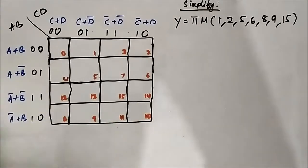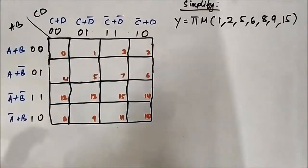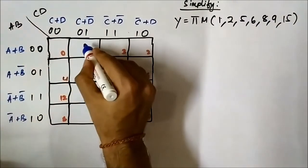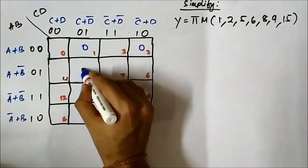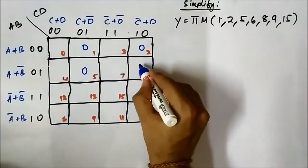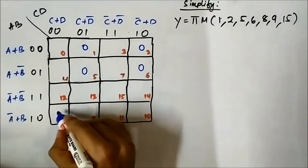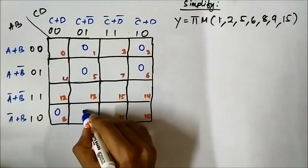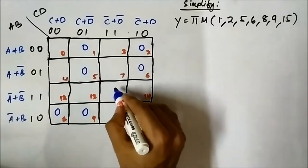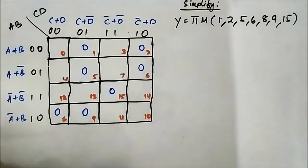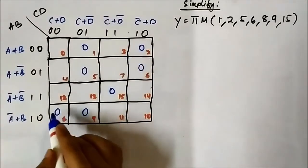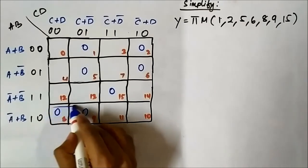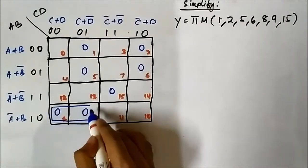We will map the values 1, 2, 5, 6, 8, 9, and 15. So we have mapped these values. Now we have to form the groups. You see cells 8 and 9, we can join to form a pair.